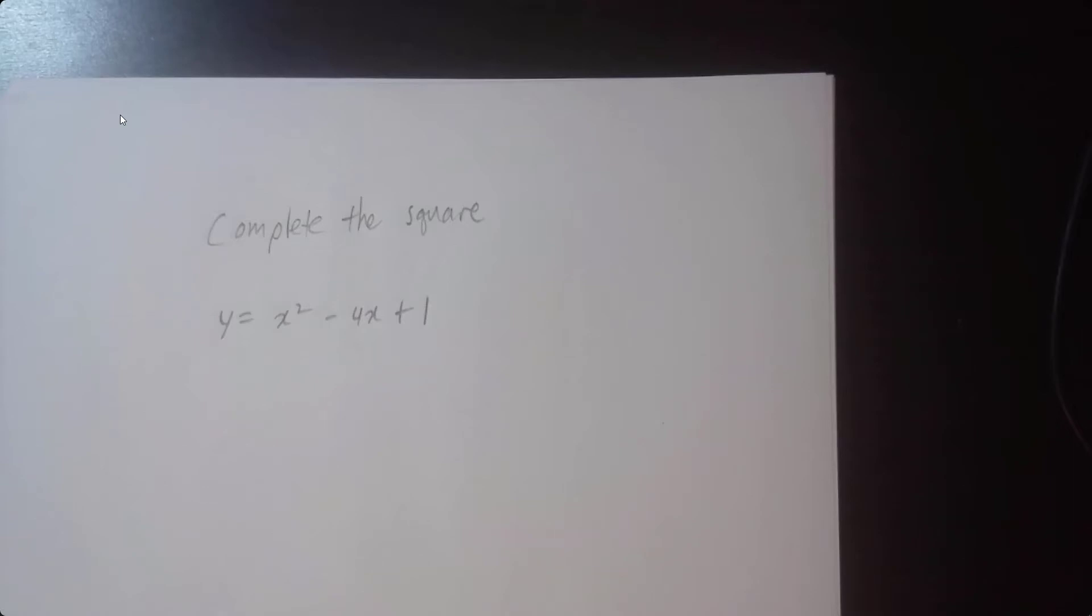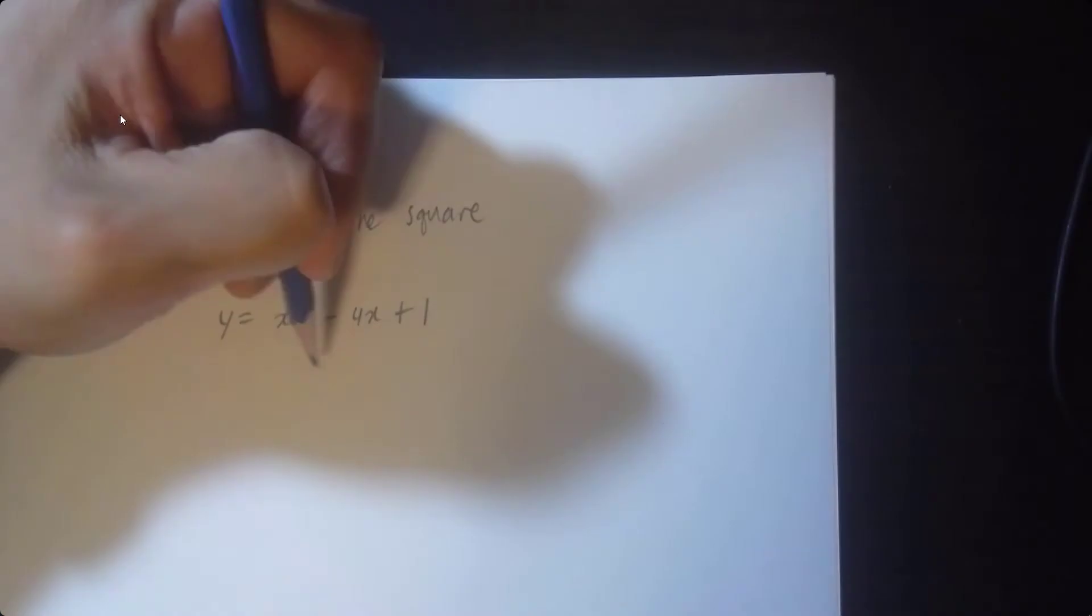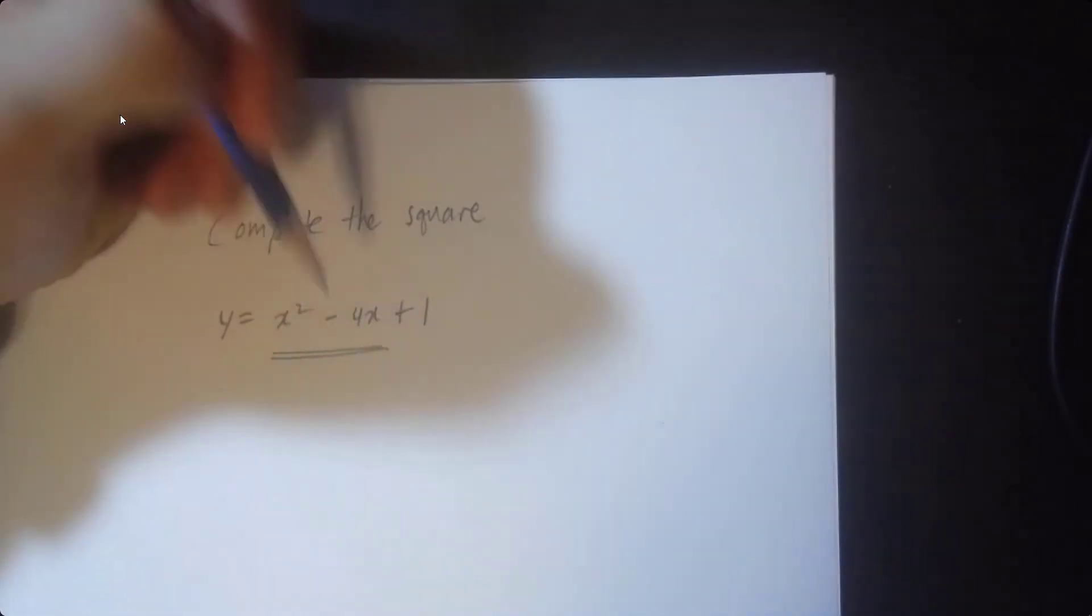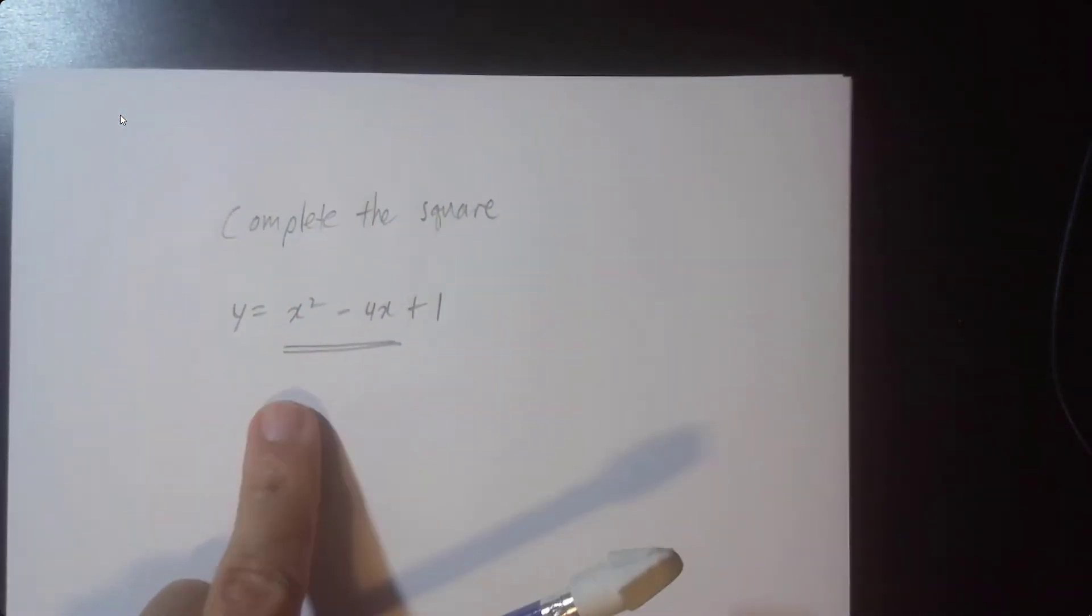Let's complete the square. We have a nice quadratic here. We're going to focus on the x squared minus 4x, the x squared with the x combo.